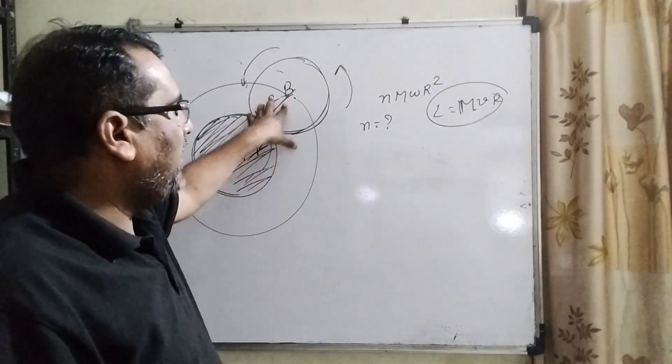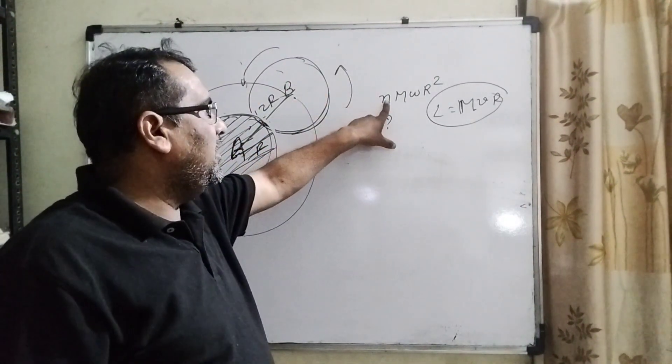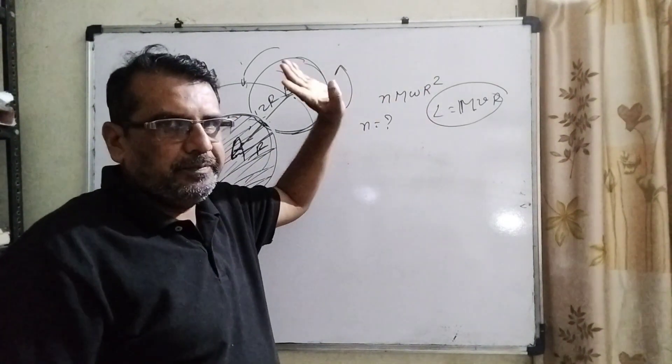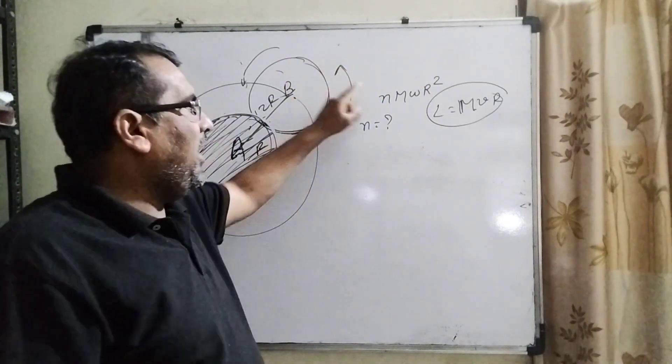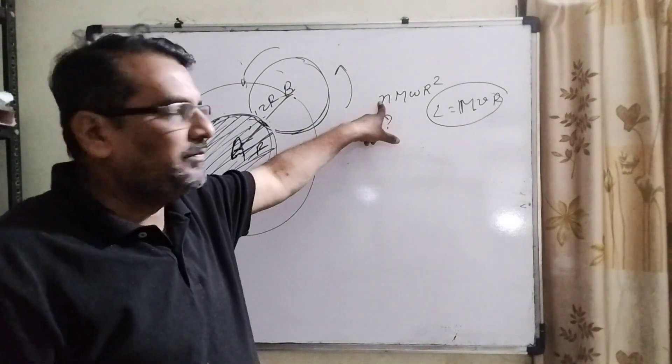And we have given that angular momentum of disk B is N M omega R square, and we have to find out the value of N.